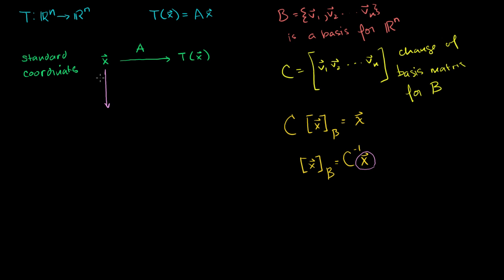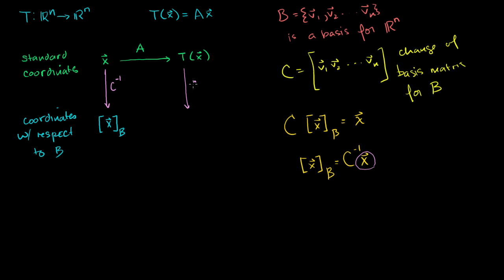If I multiply x by C inverse, then I get the B coordinates for x — coordinates with respect to B. I could do the same thing with the transformation of x: multiply it by C inverse if we want to go in that direction, and then we get the transformation of x represented in B coordinates.